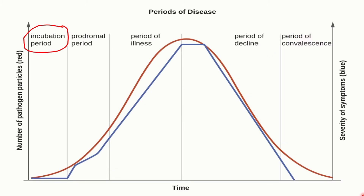Let's talk about the graph. On the y-axis I have the number of pathogens, shown in red. On the right side of the y-axis we have severity of symptoms, shown in blue. On the x-axis we have time. During the incubation period there are no symptoms, which is why the blue line is straight. But with the passage of time the number of pathogens increases, and the graph moves upward. At that point, the prodromal period starts.